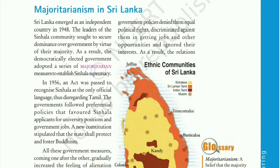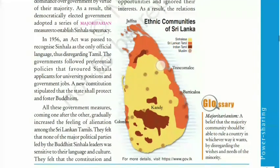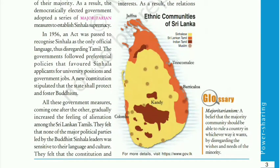In 1956, the first measure was taken — an act was passed to recognize Sinhala as the official language, disregarding Tamil. Majoritarianism is a belief that the majority community should be able to control the minority community and disregard it. The second majoritarian measure was that they favored Sinhala speakers for government jobs. The third provision was to foster Buddhism, giving religion-based importance.